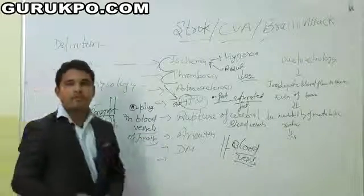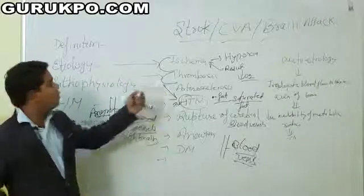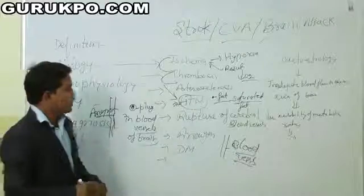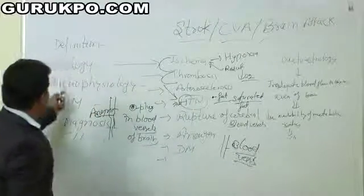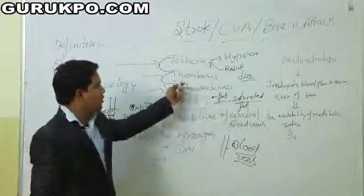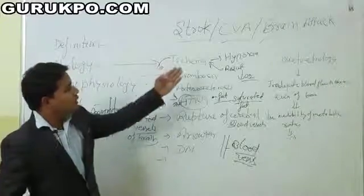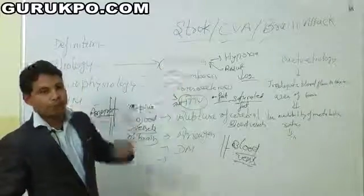Aneurysm first one is DM, Diabetes mellitus. Diabetes mellitus is a factor or etiology of stroke and CVA. Next we will see the pathophysiology. These are the etiological factors which are prominent for stroke, CVA, and brain attack.